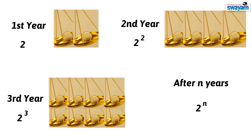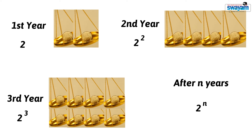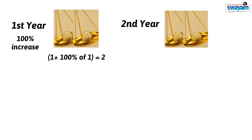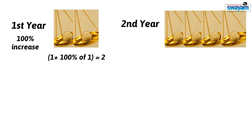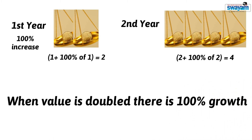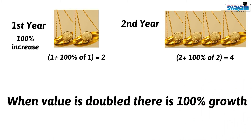This situation may also be interpreted in a different form. Since your 1 rupee became 2 rupees, you can say there was a 100 percent increase, or 1 plus 100 percent of 1, that is 2. In the second year, 2 rupees increased to 4 rupees, so you may write 2 plus 100 percent of 2, that is 4. This means when the value is doubled, there is 100 percent growth. In this case, we assume that money doubles on the last day of the first year and every year thereafter.